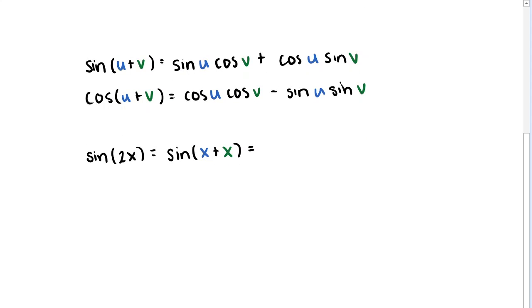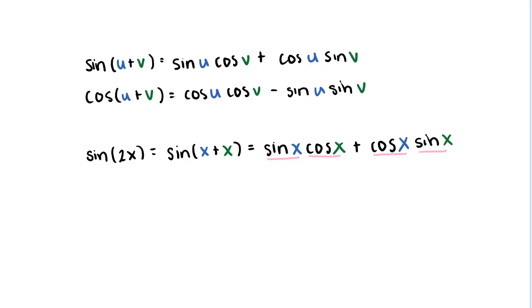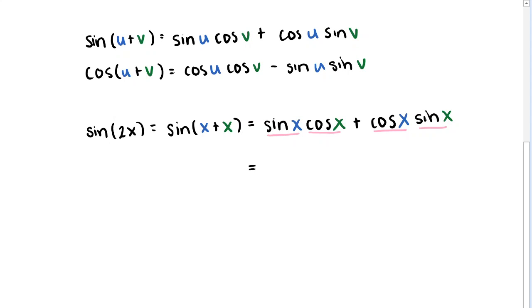Now we can use our angle addition identity with the sum of angles x and x, to write this as sine of x times cosine of x, plus cosine of x times sine of x. Since order of multiplication doesn't matter, sine of x times cosine of x is really the same as cosine of x times sine of x. So we've got two copies of sine of x times cosine of x added together, which is equivalent to 2 times sine of x times cosine of x. And so there we have it — this is the double angle identity: sine of 2x equals 2 sine x cosine x.